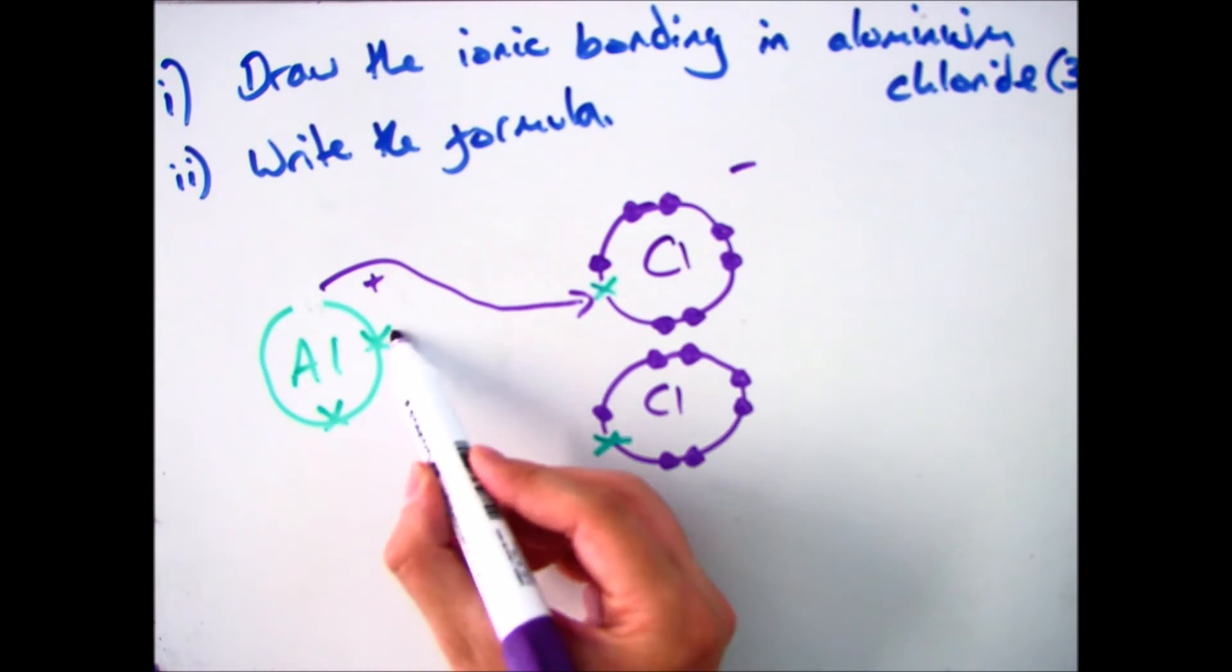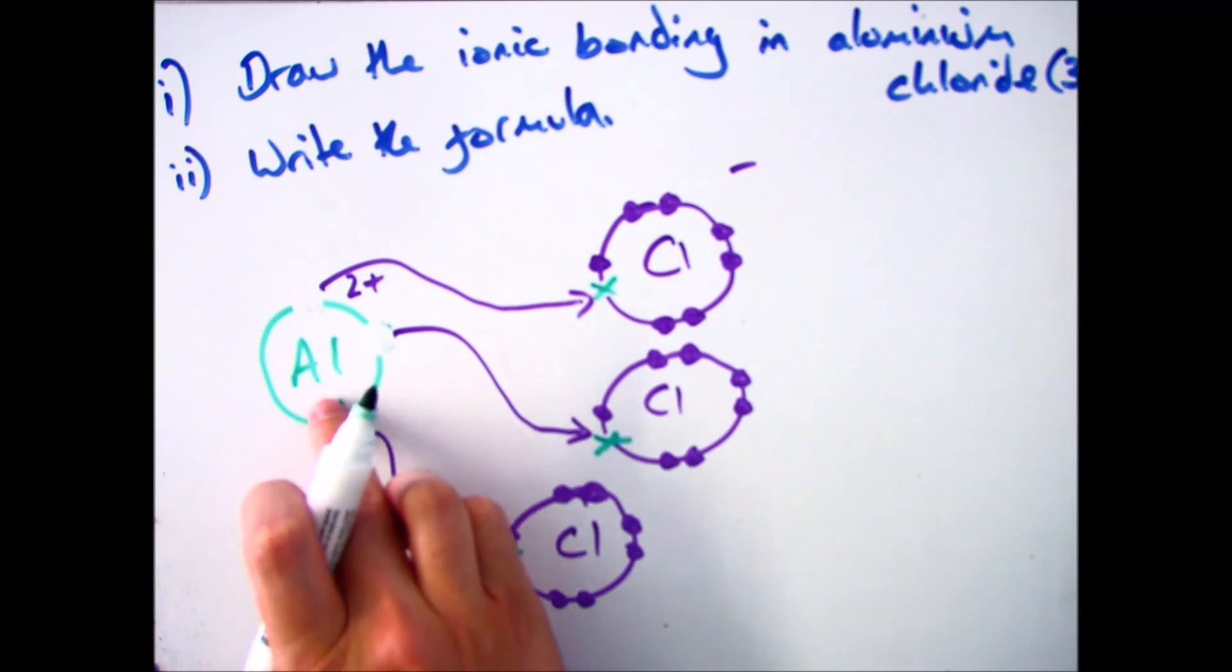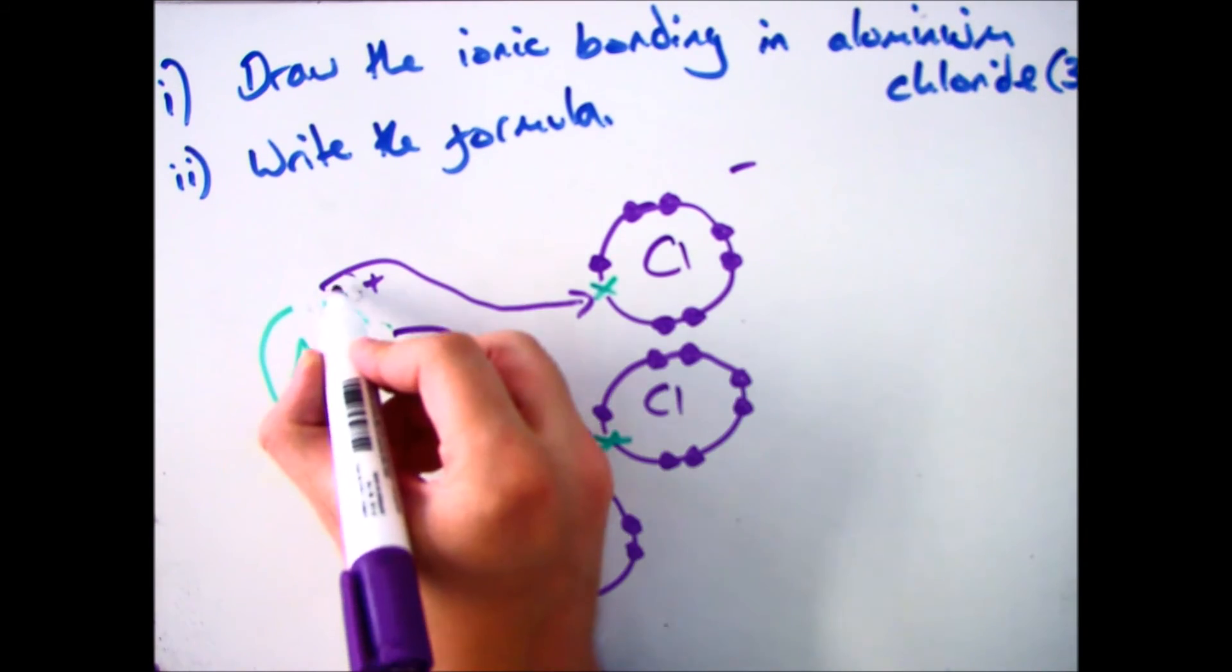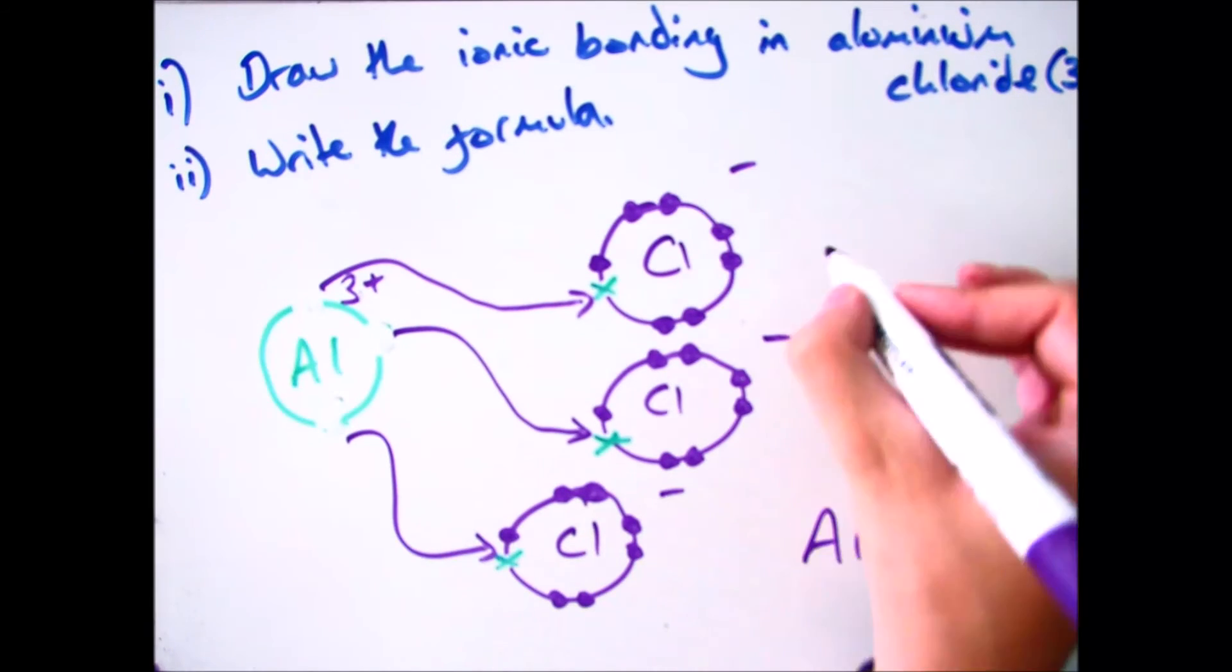So you'll have another chlorine there with a minus charge, and you'll have aluminium with a 2+ charge. You need to lose one more aluminium electron, so draw one more chlorine, and then do the same again. So you'll now have Al3+ and three chlorines with a negative charge.